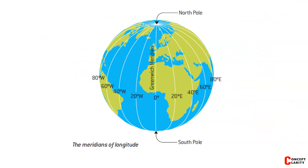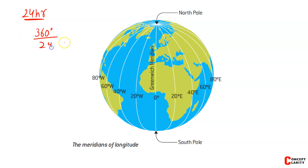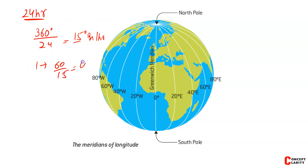Explain why there is a 4-minute gap between each longitude. The earth completes rotation in 24 hours, covering 360 degrees. So 360 divided by 24 gives us 15 degrees per hour. That means the earth moves 15 degrees in 1 hour. So 60 minutes divided by 15 gives us 4 minutes per degree of longitude.